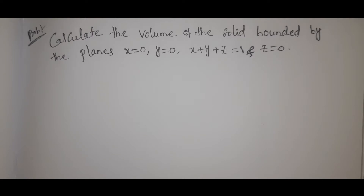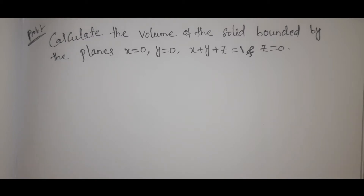Let's see here. We need to find the volume of the solid bounded by the planes x equal to 0, y equal to 0, x plus y plus z equal to 1, and z equal to 0.